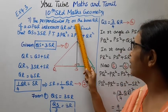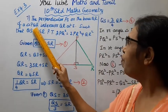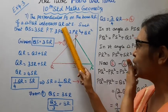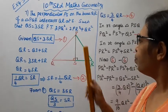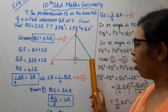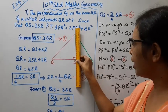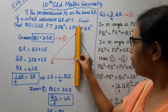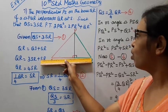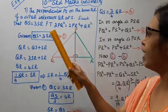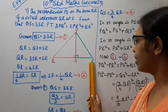The perpendicular PS is on the base QR of a triangle PQR, intersecting QR at S. PS is perpendicular to the base QR, such that QS equal to 3SR.